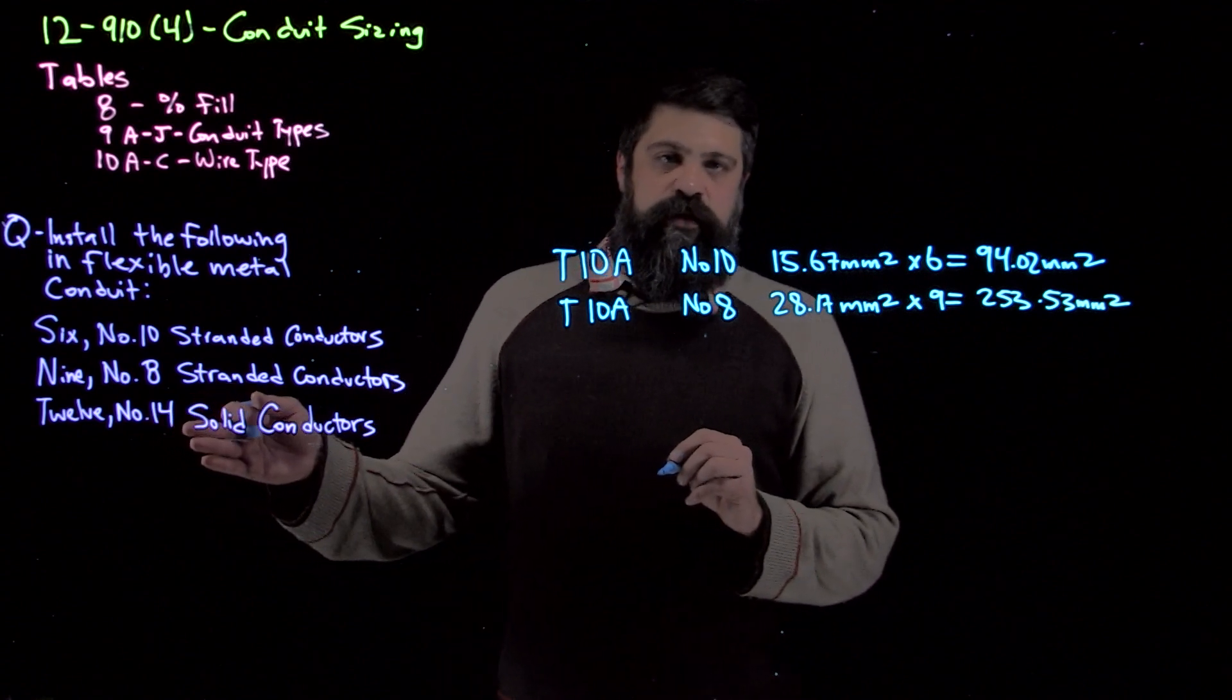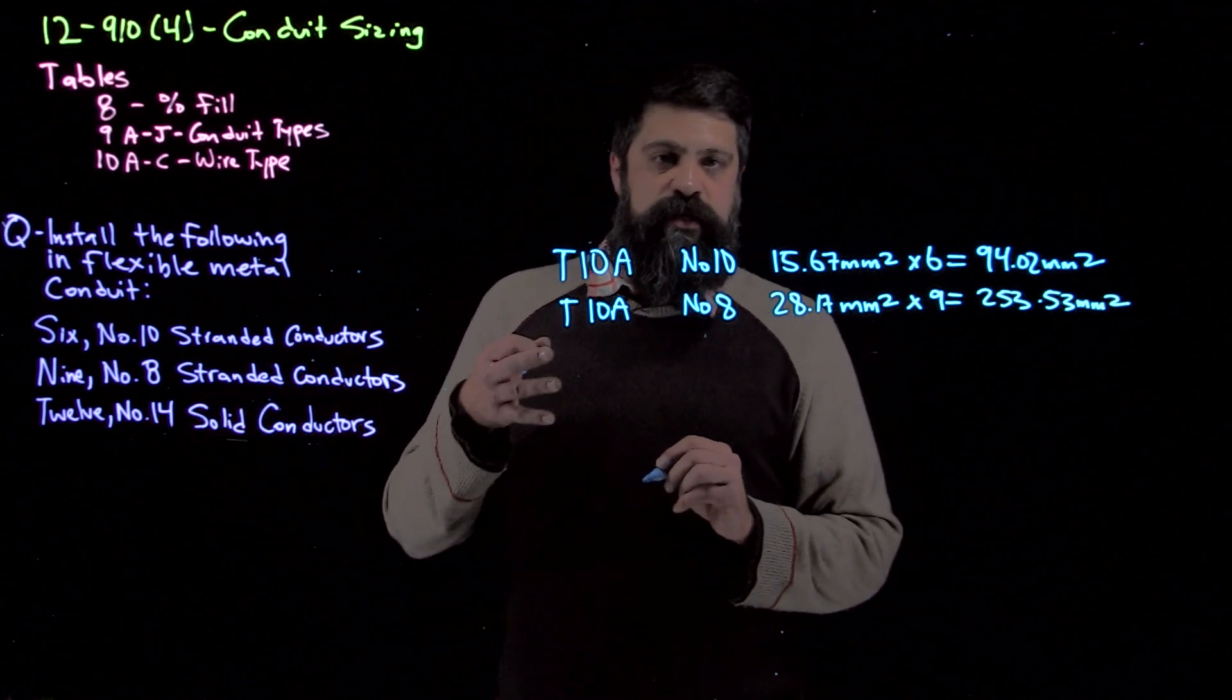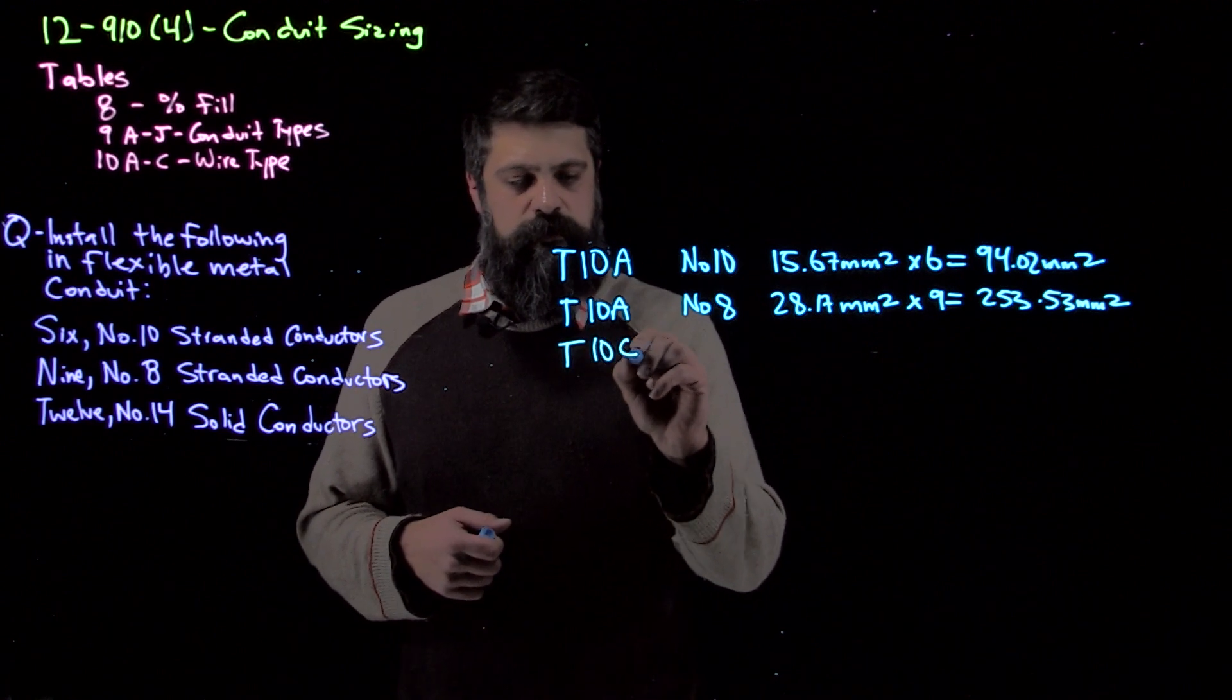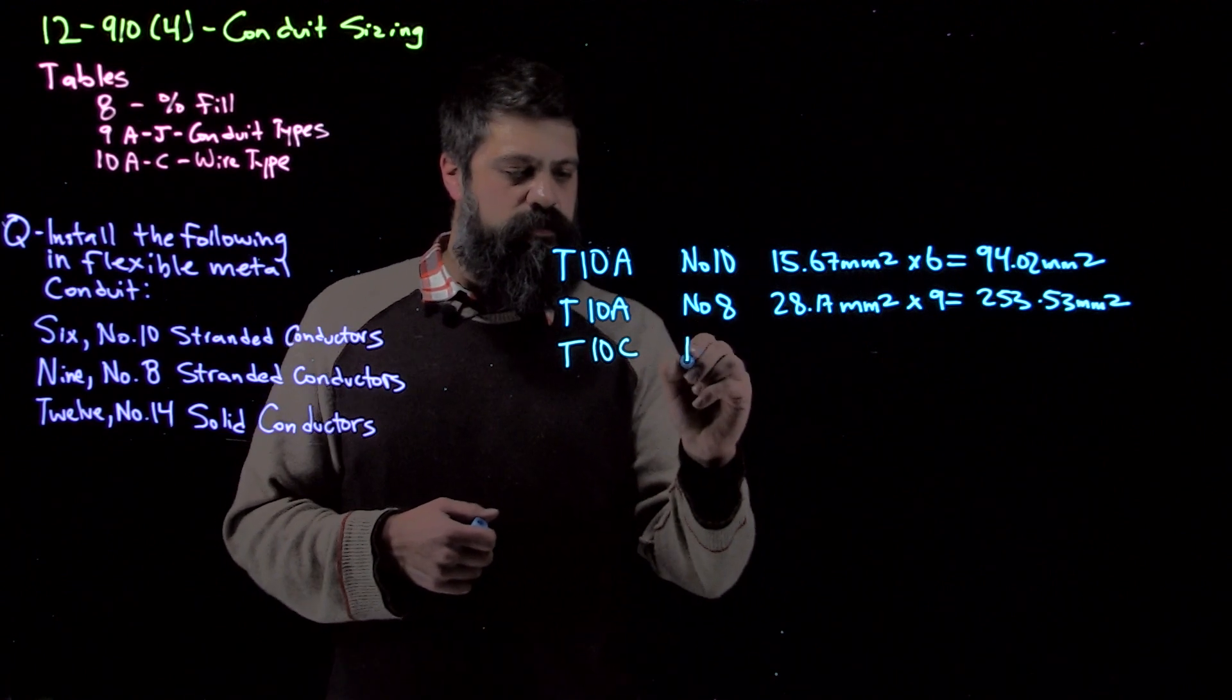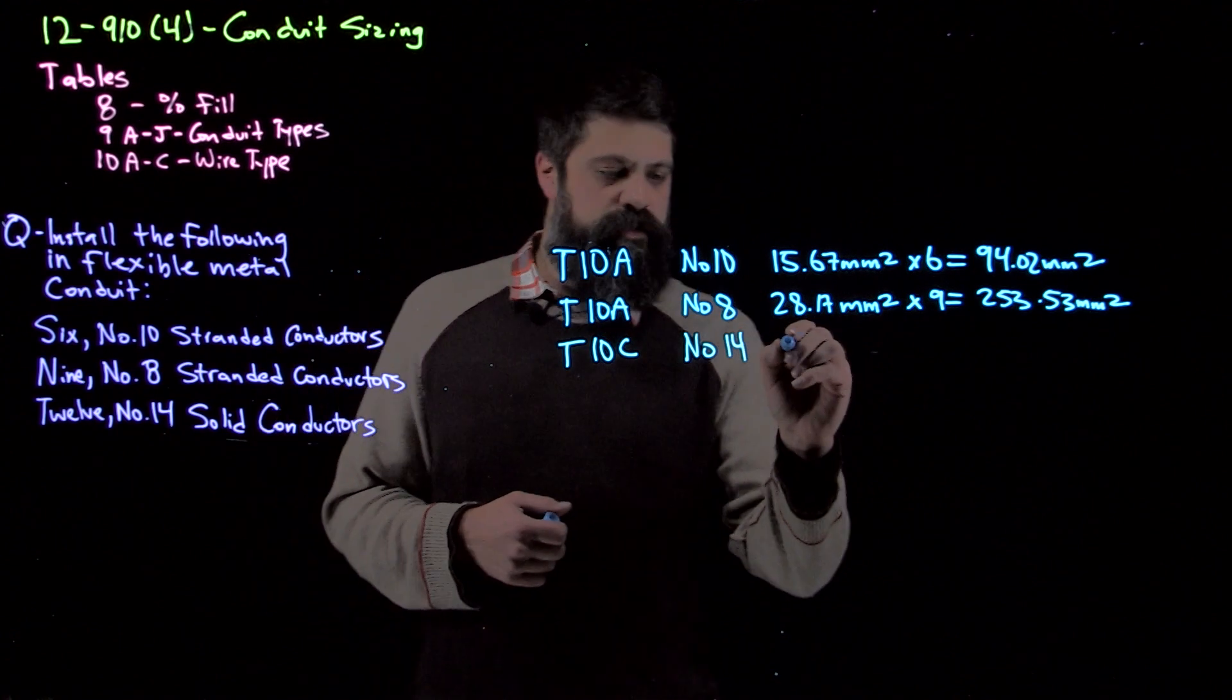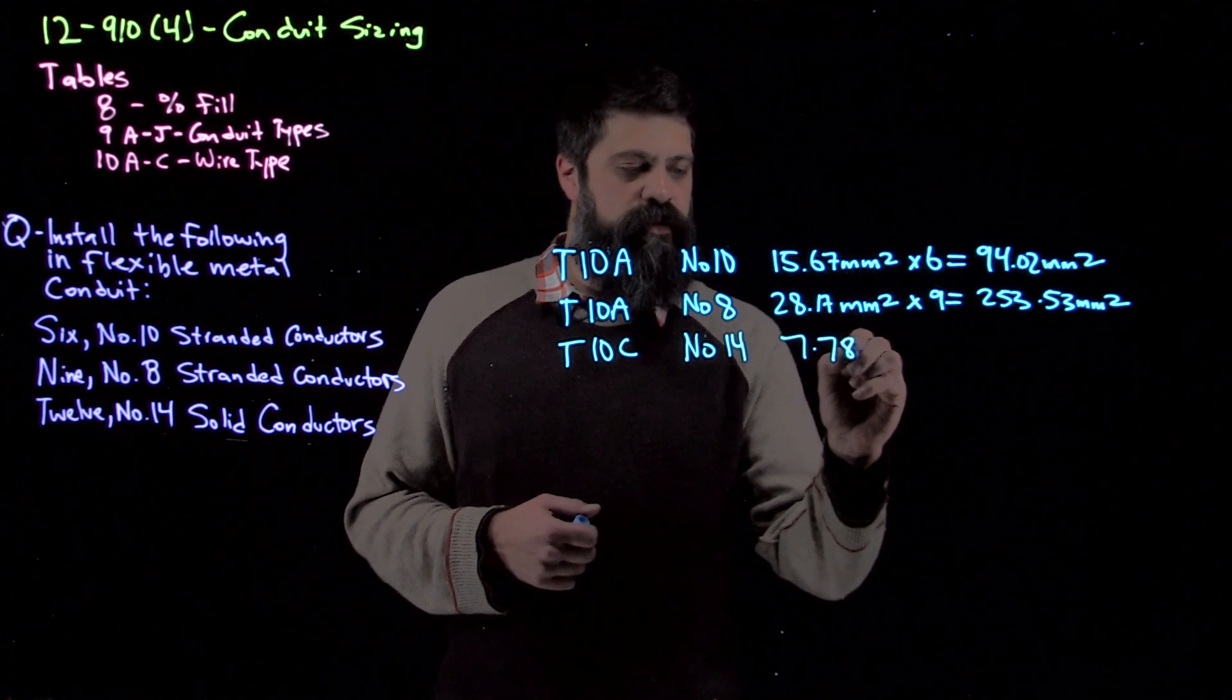The last one we have is a number 14, but this time it's solid, so we're not going to be in 10A. We're going to have to go over to table 10C. So table 10C gives me all of my solid conductors. For number 14, a single one of those is 7.78 mm².